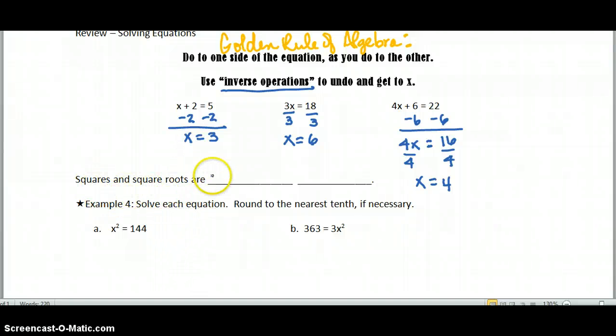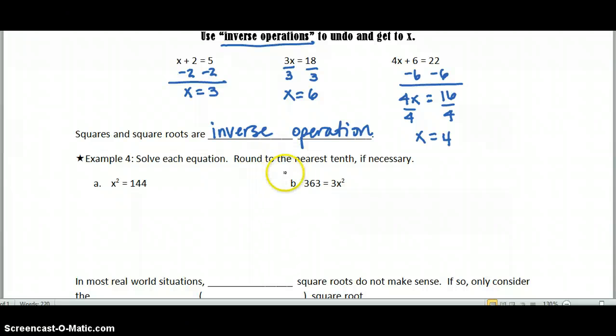So hopefully, you remember solving equations. Now, we're going to add to the mix squares and square roots. Squares and square roots are also called inverse operations. To undo something being squared, you take the square root. So for the first equation, we have x being squared. We need to undo what's happening to x. So we need to take the square root of x squared, which means we have to do the same thing to both sides of the equation.